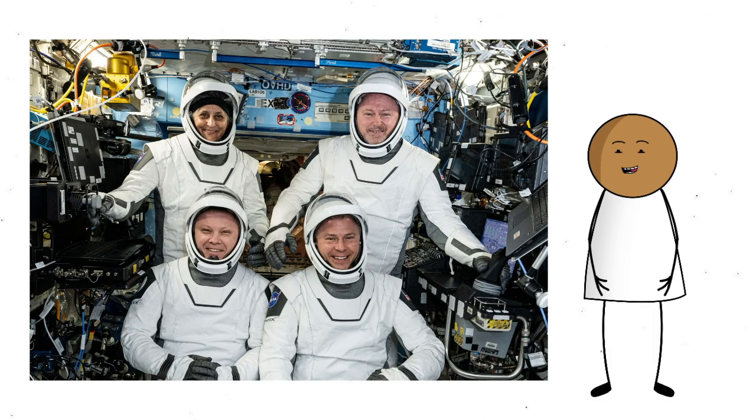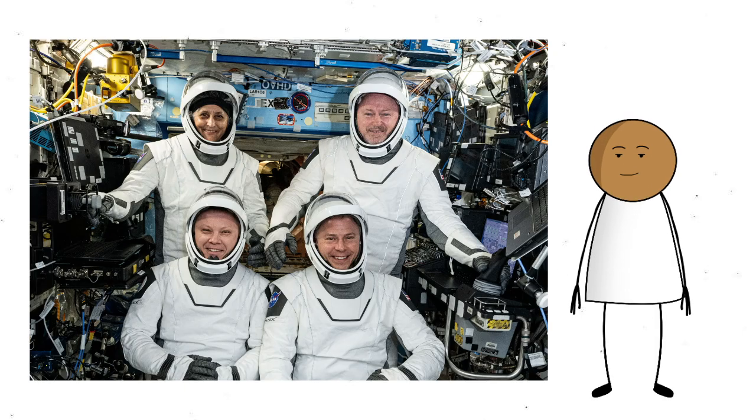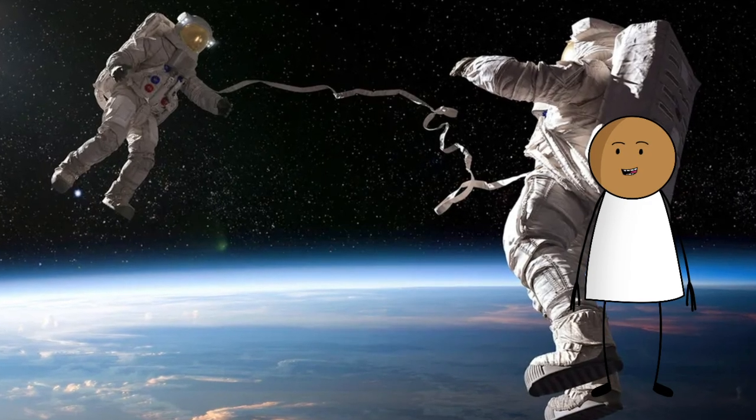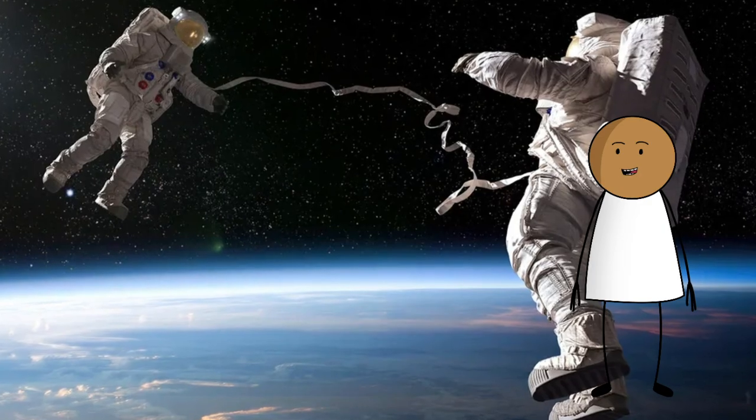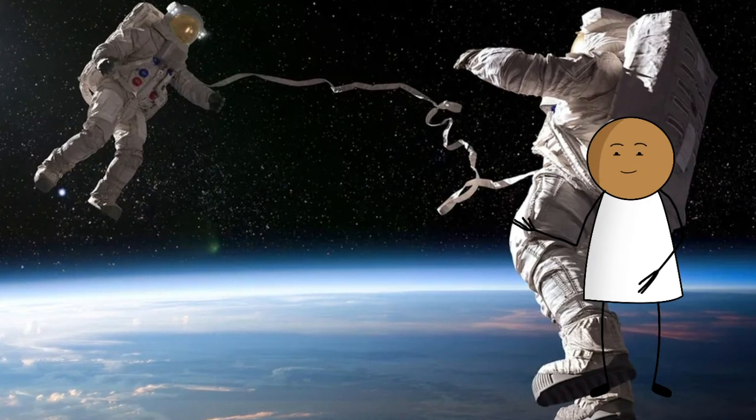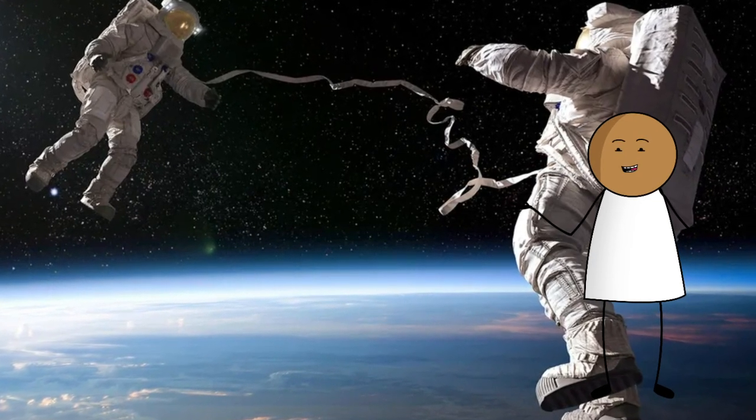Astronauts on the International Space Station age just a tiny bit slower than us on Earth, because they're orbiting in slightly weaker gravity. It's only a few milliseconds over a year. But still, space is literally making them younger. But now, let's talk about something even weirder.